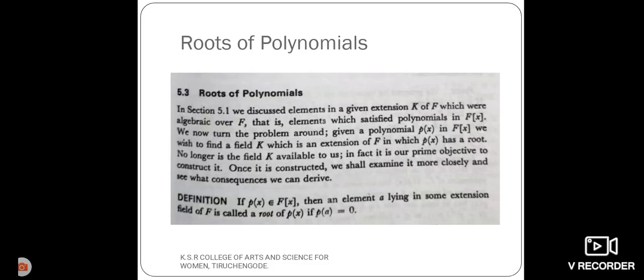Definition: If P of X is a polynomial which belongs to the field F of X over the polynomial, then take an element A which is lying in some extension field F. It is called a root of polynomial P of X. The condition is P of A equals 0.